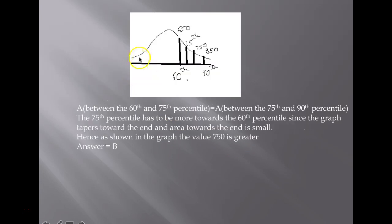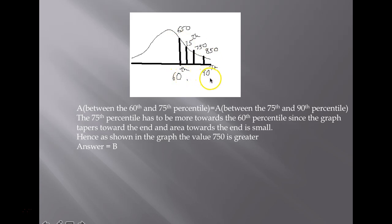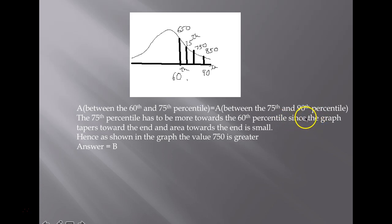When you come to percentile, you are dividing the entire distribution into 100 parts, and 1 percentile is 1/100th part. I have marked the 60th percentile and the 90th percentile. The value at the 60th percentile is 650 and the value at the 90th percentile is 850. The area between the 60th and 75th percentile should equal the area between the 75th and the 90th percentile.